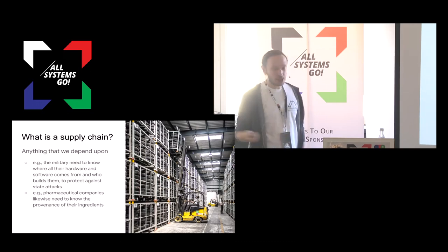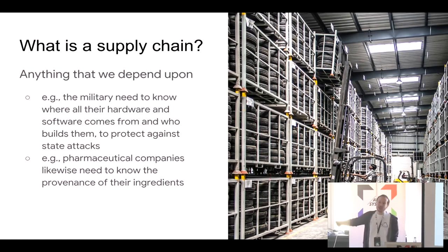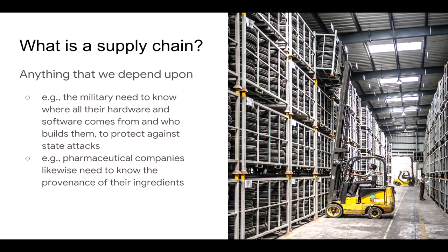So what is a supply chain? It's anything that we depend upon. For example, in a military situation, every piece of hardware and software has to be attested against the person who built them to protect against nation state attacks. Pharmaceutical companies likewise need to know the provenance of every part of their supply chain because people are ingesting these things.